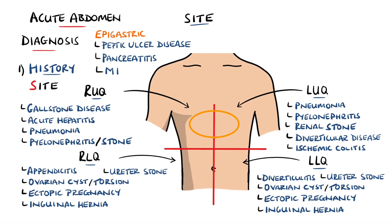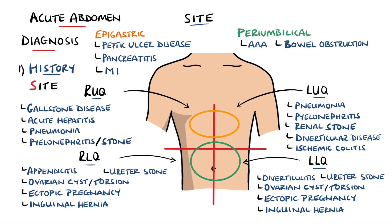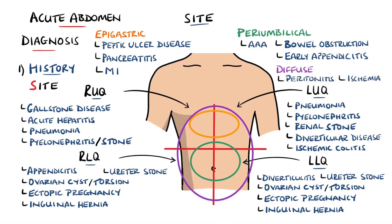In the western world, diverticulitis is more common on the left side. However, in the Asian population, it is more common to have it on the right side. Pain in the periumbilical region may be more indicative of an abdominal aortic aneurysm, a bowel obstruction, or the early stages of appendicitis. If there is pain diffusely across the abdomen, this may be more suggestive of ischemia or peritonitis.